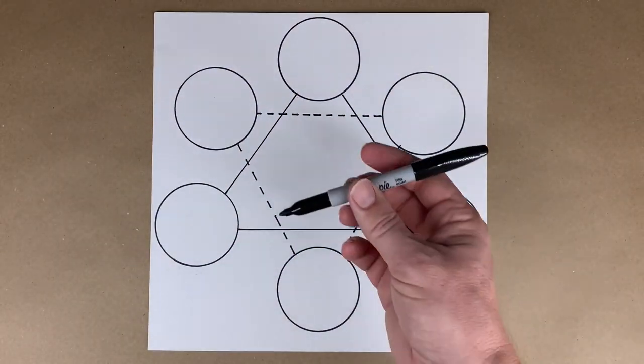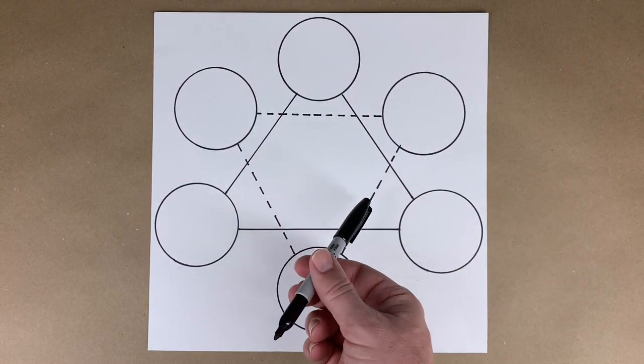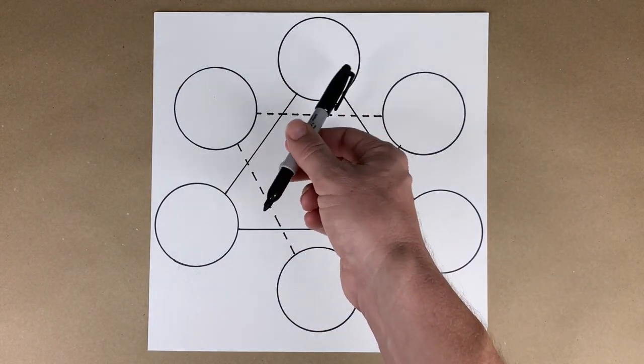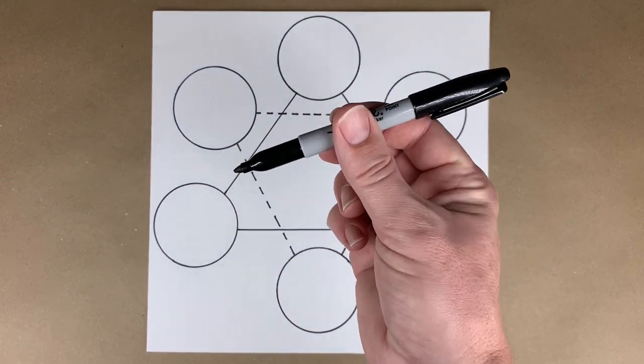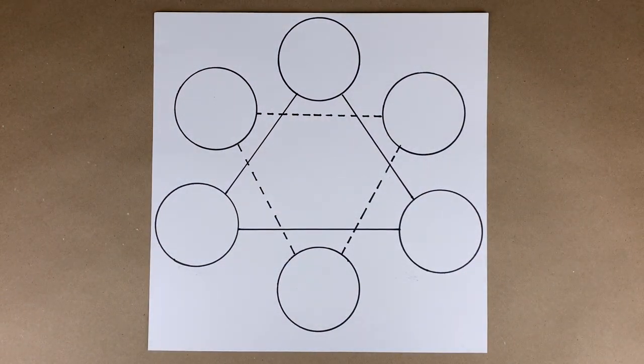If you're drawing with marker, make sure you're using a permanent marker because when we add the paint, you don't want the marker to get wet and smudge. Washable markers will smudge if you wet them. That's why I'm using a permanent marker or just use your pencil.